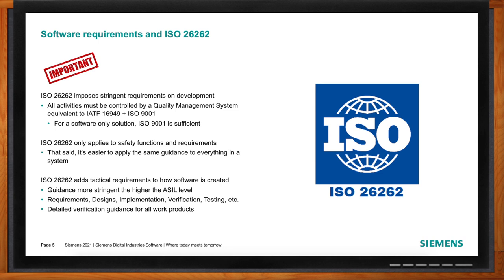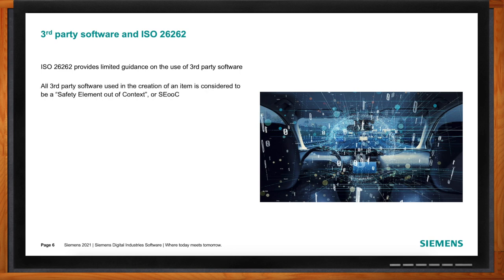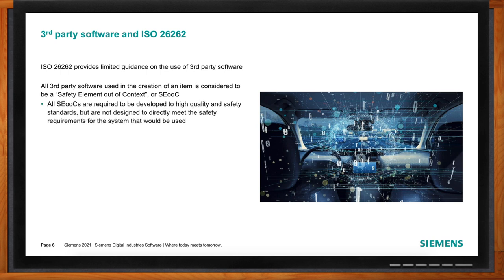ISO 26262 doesn't say all that much about third-party software — it kind of assumes that all software is being developed by the item provider. However, the standard does provide a framework: the concept is called a Safety Element out of Context, or SEoC. SEoCs are pieces of something that might then become an item or system in the car, but it's not the whole thing — it's one element that we can talk about outside of the safety requirements it might be helping to fulfill. That's why it's called 'out of context.'